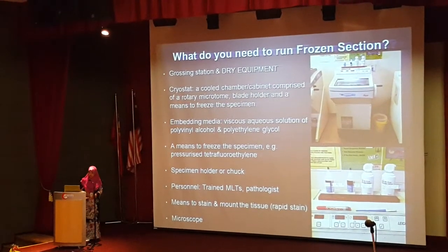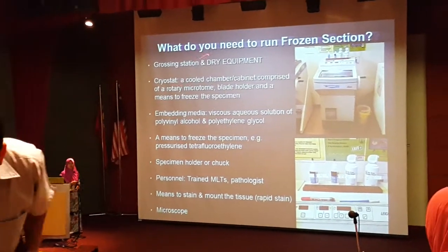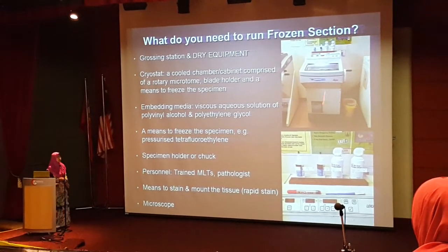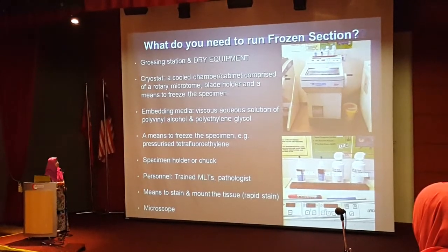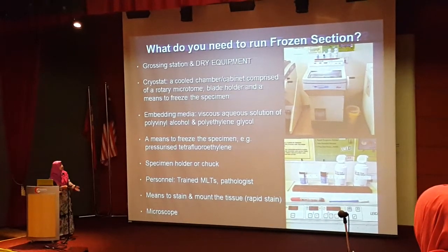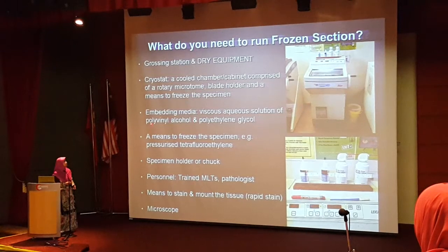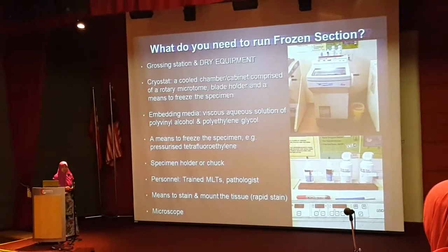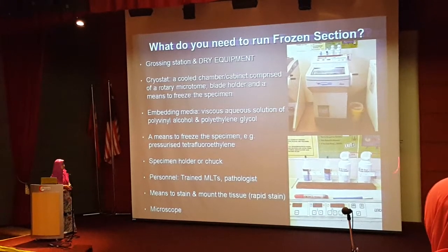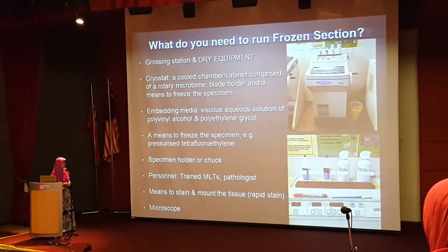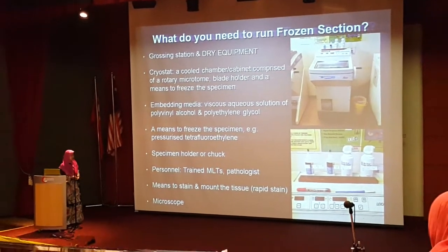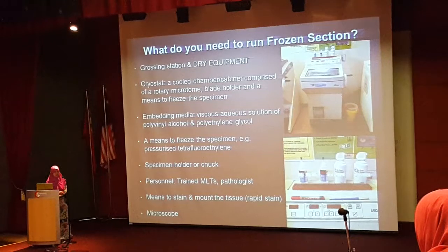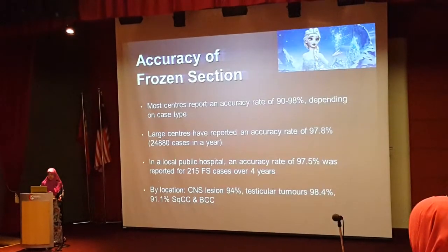To briefly cover the equipment required for frozen sections: first, a grossing station where everything must be absolutely dry; second, a cryostat — a cooling chamber that can go as low as minus 40°C, with a microtome and blade holder inside; third, a means to freeze the specimen, using an embedding medium that is a combination of polyvinyl alcohol and polyethylene glycol (OCT), plus pressurised carbon dioxide to freeze the specimen holder. We also need a specimen holder, skilled staff to produce quality slides, pathologists to interpret them, and a modified rapid staining protocol — in our hospital this takes approximately four minutes — plus microscopes to assess the slides.